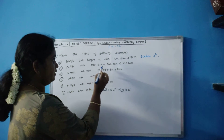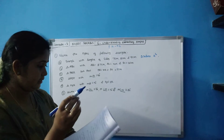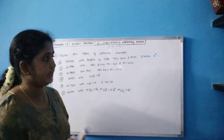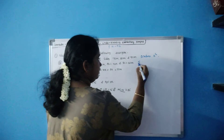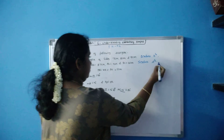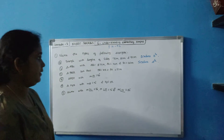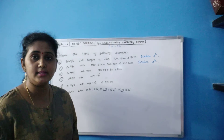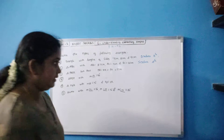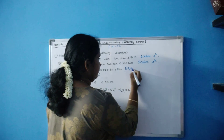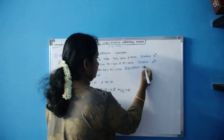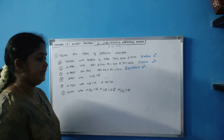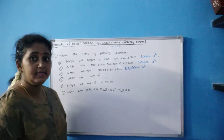Triangle PQR such that PQ = QR = PR = 5 cm. All three sides are 5 cm, so it is nothing but an equilateral triangle. Triangle DEF with angle D as 90 degrees — if it is 90 degrees then it is a right angle triangle.